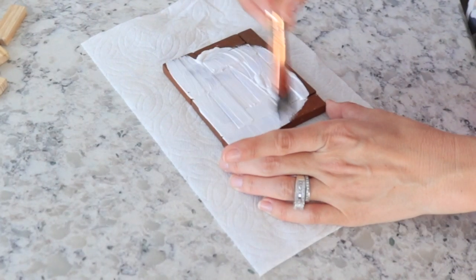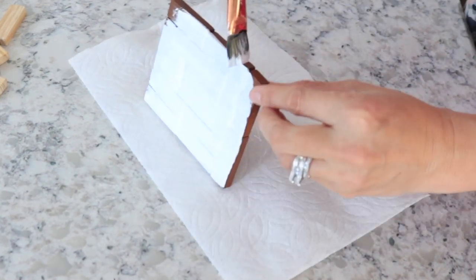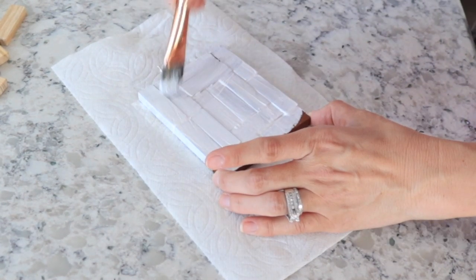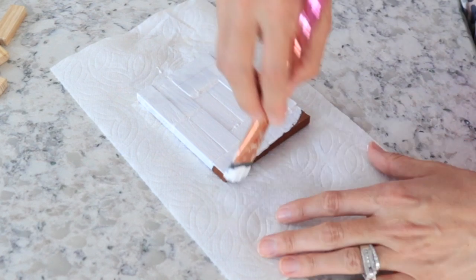Now I'm just using some white paint that I picked up from Walmart and I'm just going to paint the entire thing white and the sides. I didn't worry about the bottom because you're really not going to see that part.